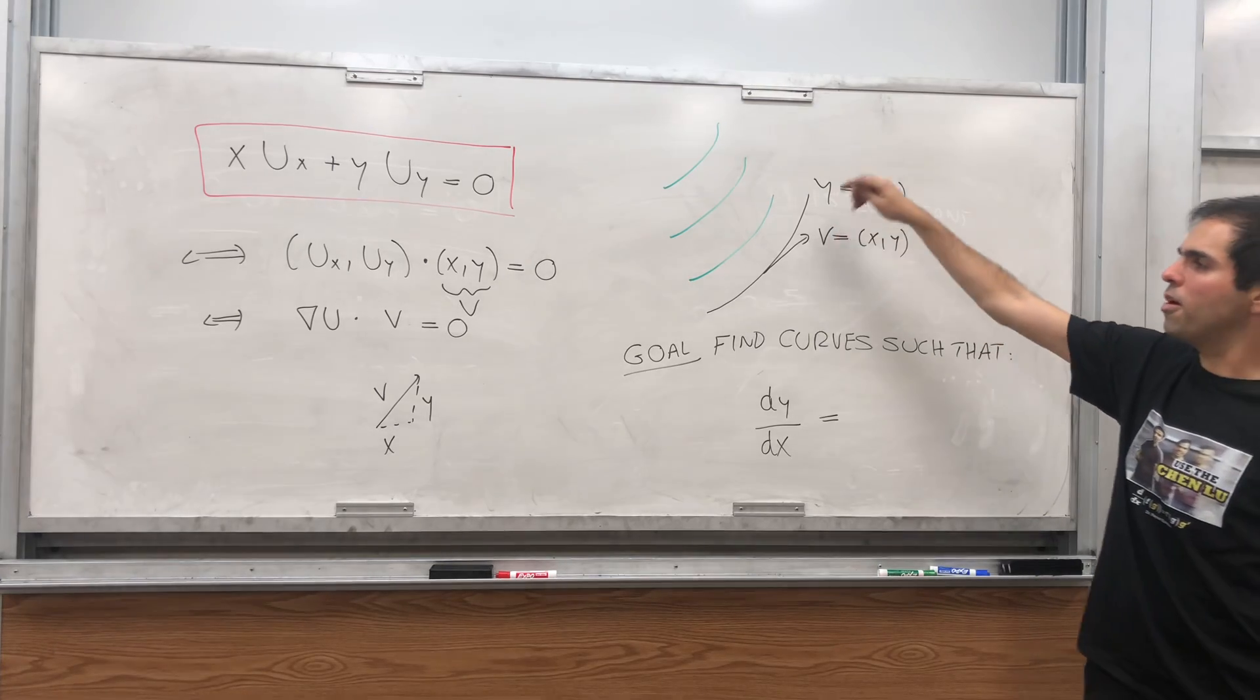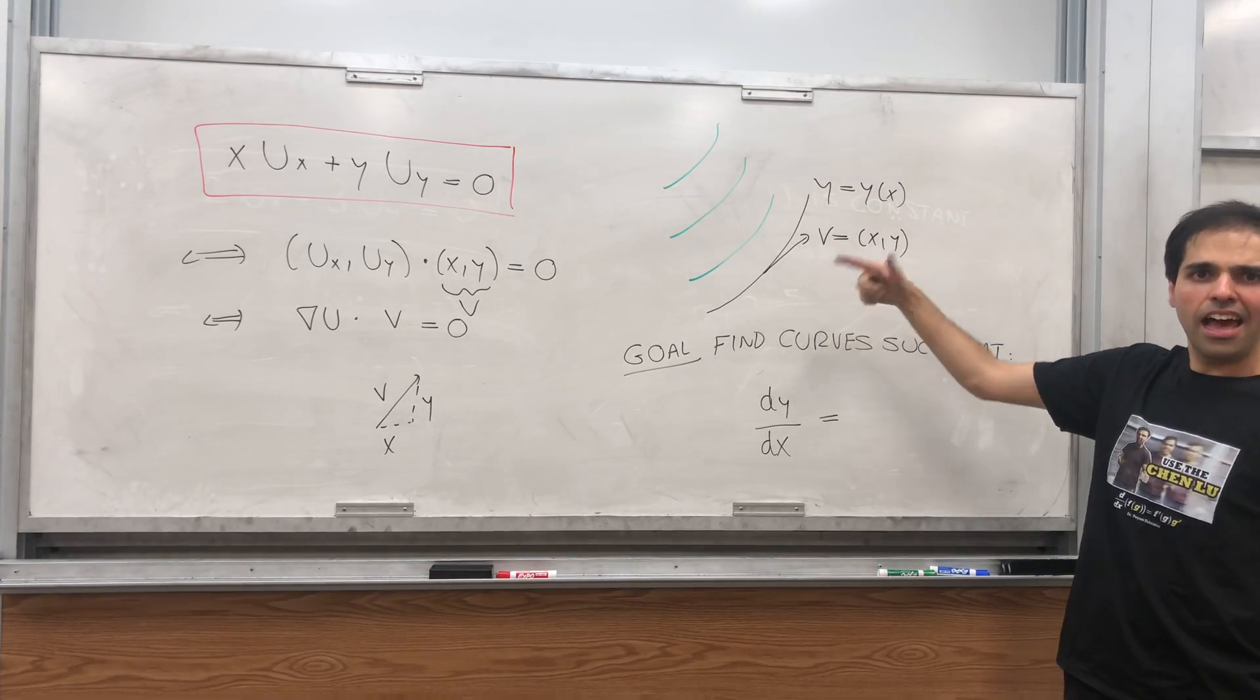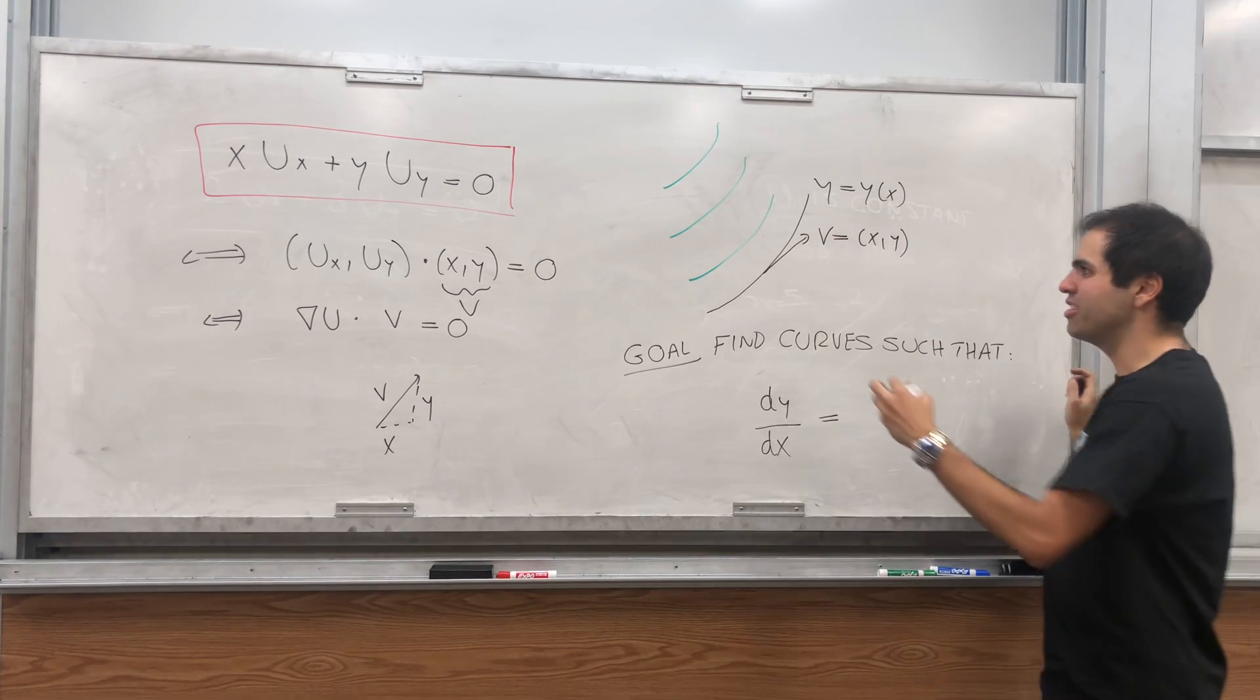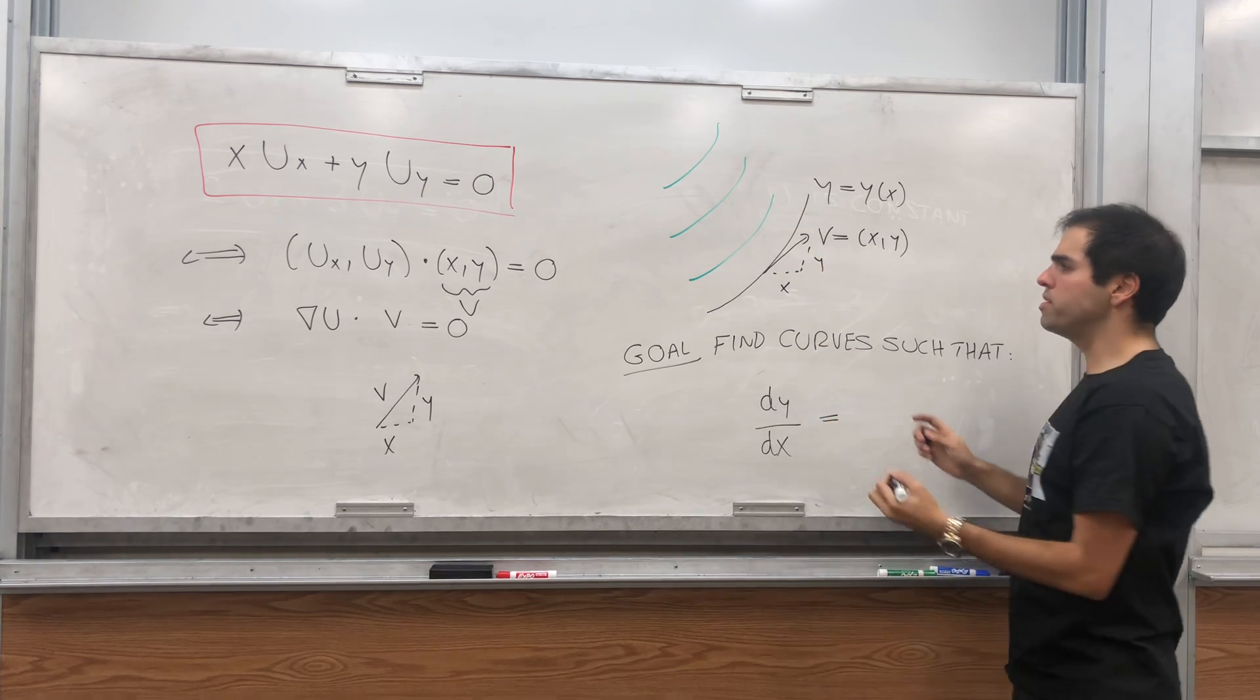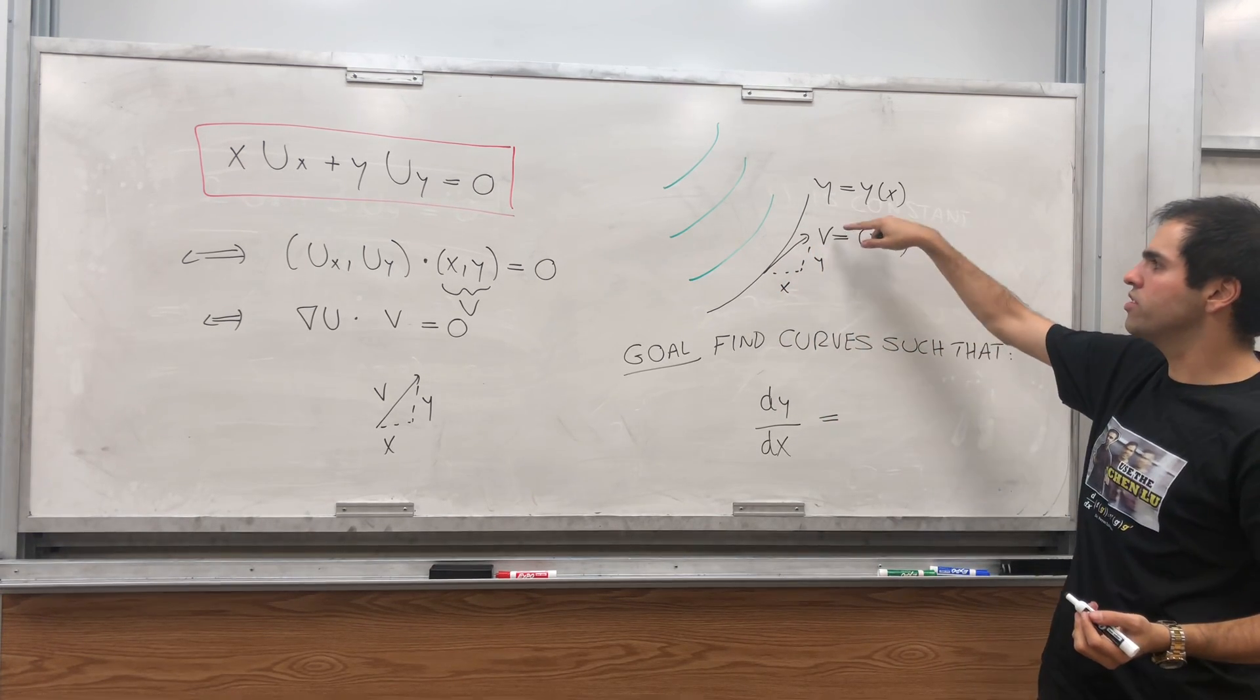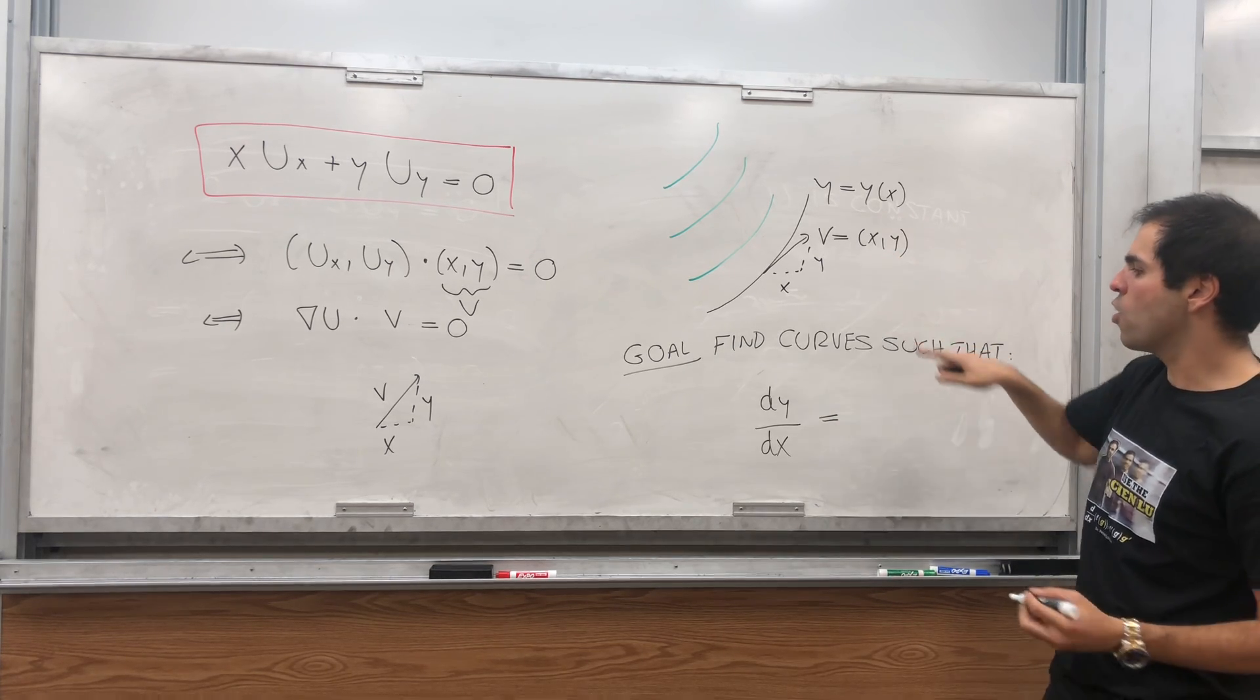On the other hand, what is the slope of this curve? We said that the tangent vector is v. And because we're in two dimensions, the slope is actually easy to define. It's just rise over run. So here, the slope should be y over x.